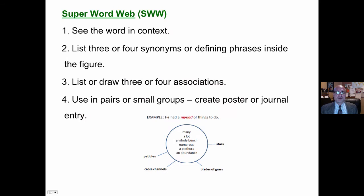Again, works best in pairs or small groups. The super word web is a more visual type of synonym and association. Again, you see the word in context. List three to four synonyms or defining phrases inside the figure and associations on the outside.